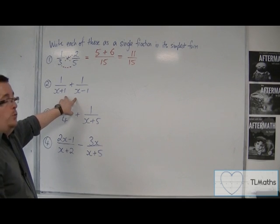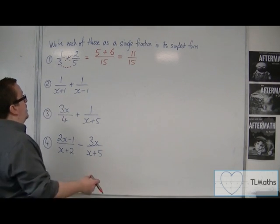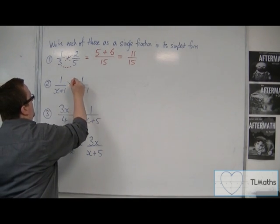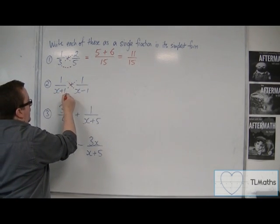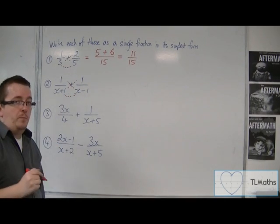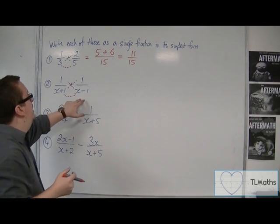So when we get on to algebraic fractions like this, it's much the same method. 1 lot of x minus 1 plus 1 lot of x plus 1 divided by x plus 1 times x minus 1.